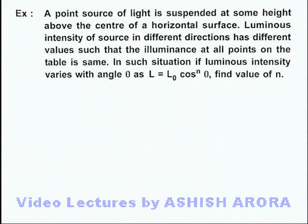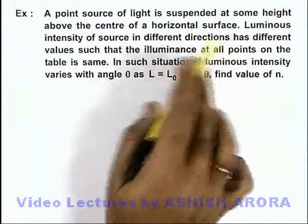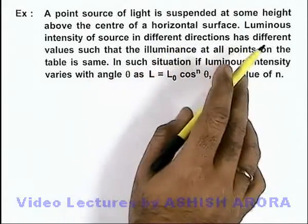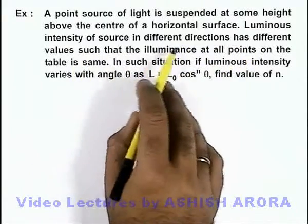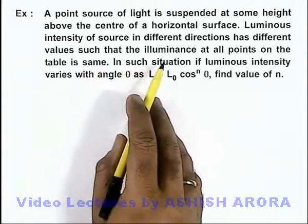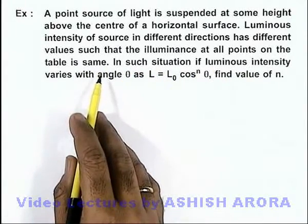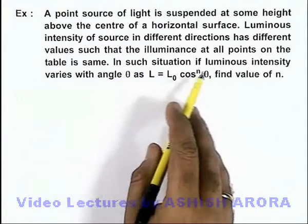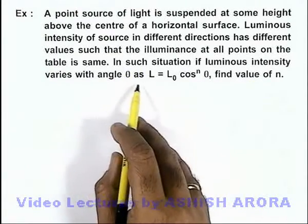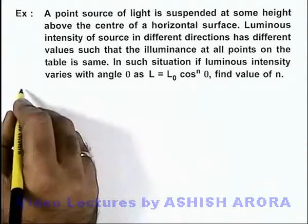In this example, we are given that a point source of light is suspended at some height above the center of a horizontal surface. Luminous intensity of source in different directions has different values such that the illuminance at all points on the table is same. If luminous intensity varies with angle theta as L = L0 cos^n theta, we are required to find the value of n.